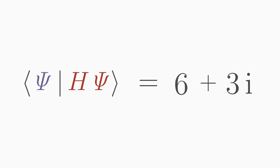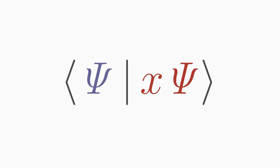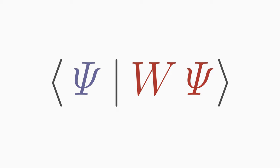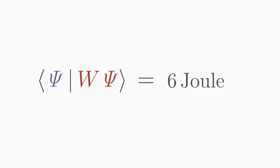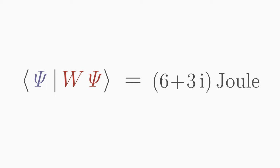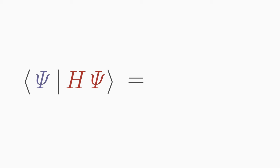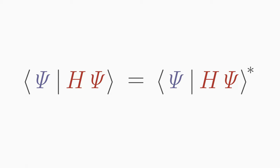In quantum mechanics, however, we can also get a complex mean value with a real and imaginary part. For example, if we want to calculate the mean value of position or mean value of energy, then we expect quantum mechanics to give us a real value. A complex position or energy do not make any sense. In such cases, we require that the mean must be equal to the complex conjugate mean.